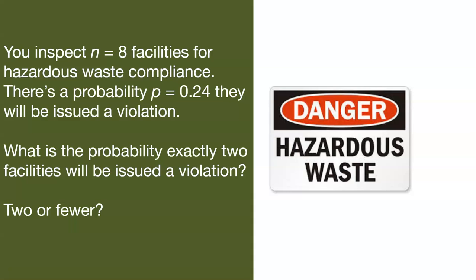Let's say in a day you can inspect eight facilities for hazardous waste compliance, and there's a probability p equal to 0.24 that they will be issued a violation. We want to know two questions: What is the probability that exactly two facilities will be issued a violation?